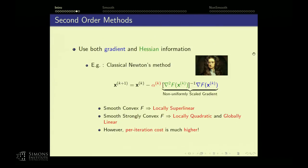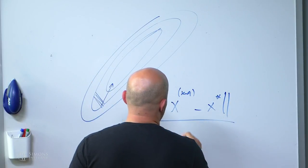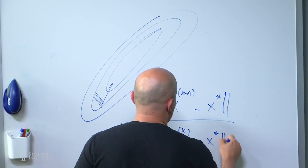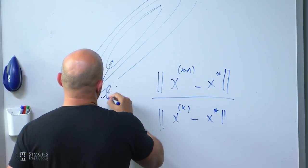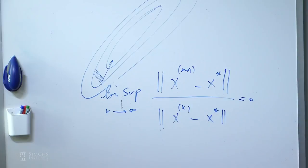What do I mean by super-linear? If you look at the ratio of the error at the next iteration to the current iteration — where this goes to zero — the numerator actually goes faster and faster. So the ratio goes to zero, meaning convergence is faster than any linear rate.